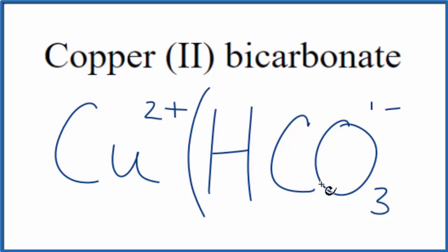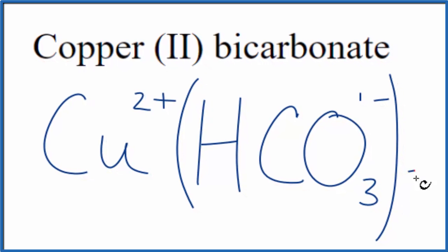So let's put parentheses around the bicarbonate ion, and then put a 2 out here. Remove these symbols here, and this is the formula for Copper 2 Bicarbonate, Cu(HCO3)2.